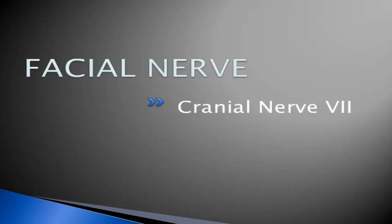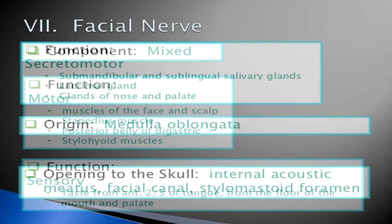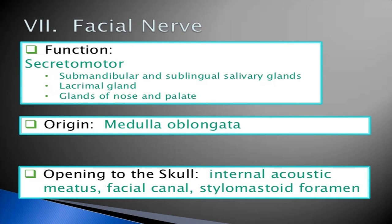The facial nerve is the seventh cranial nerve and is the most important cranial nerve. Its component is mixed — motor and sensory. The motor function includes muscles of the face and scalp, stapedius muscle, posterior belly of digastric, and stylohyoid muscle. The sensory function provides taste from the anterior two-thirds of the tongue, from the floor of the mouth and palate. The secretomotor function supplies the submandibular and sublingual salivary glands, lacrimal gland, and glands of the nose and palate. Its origin is the medulla oblongata. The opening of the skull is the internal acoustic meatus, facial canal, and stylomastoid foramen.